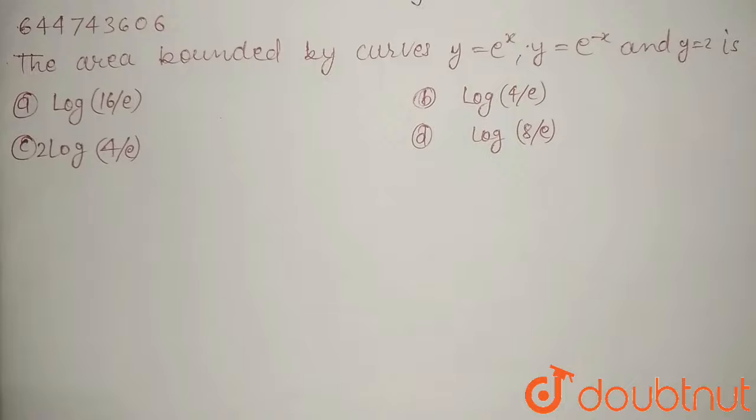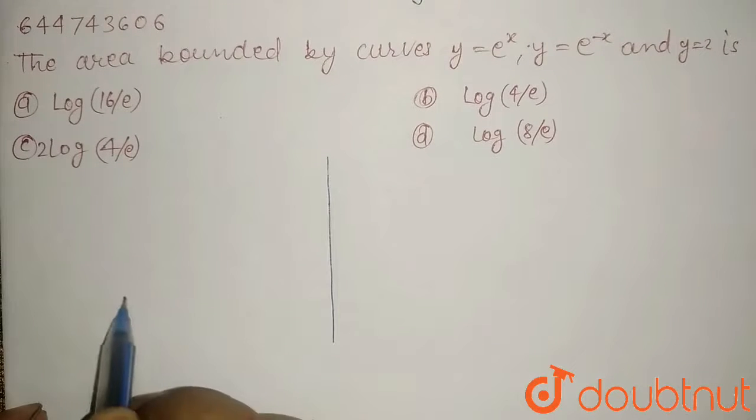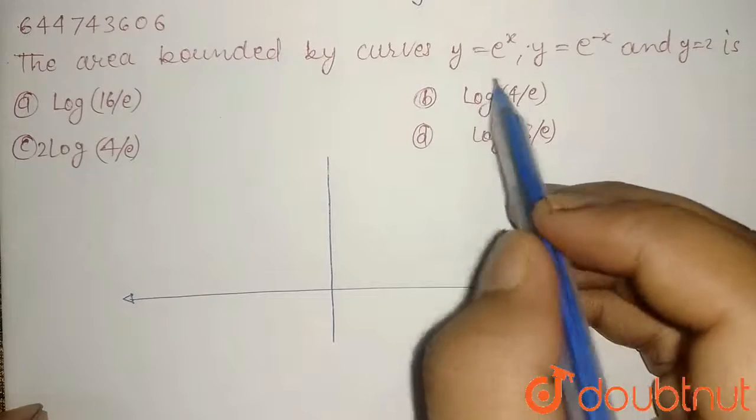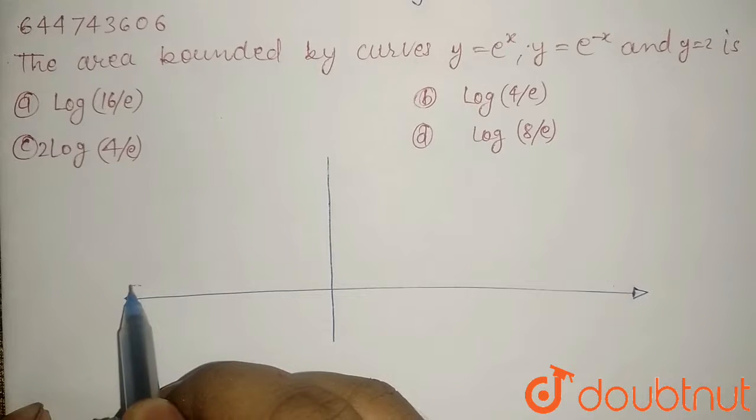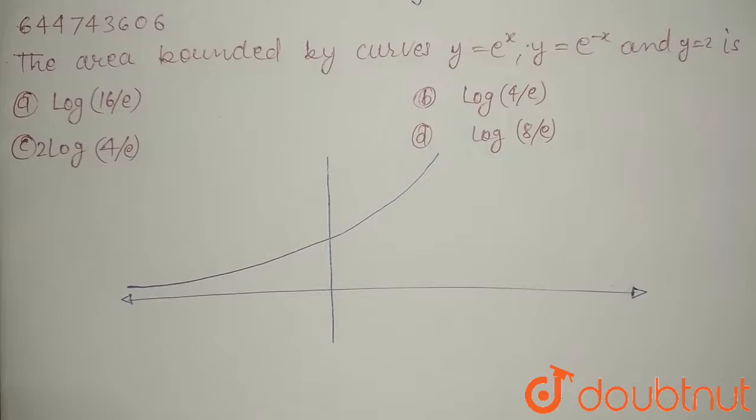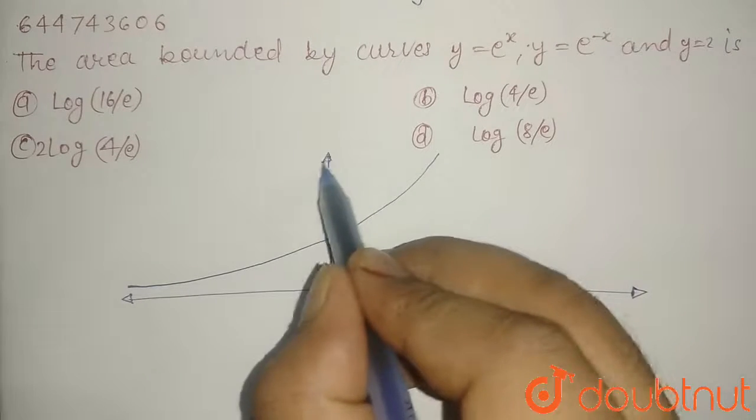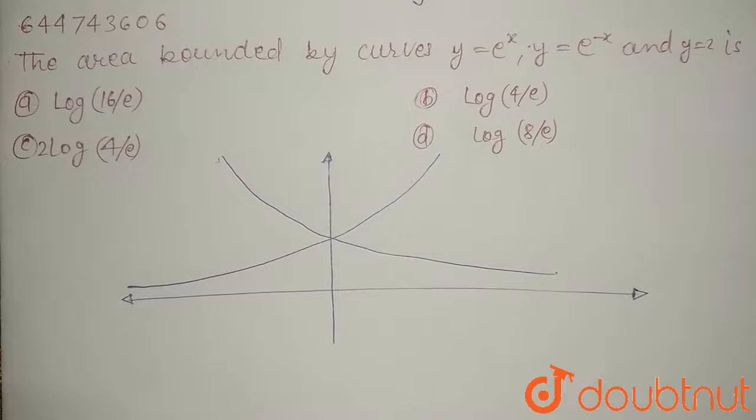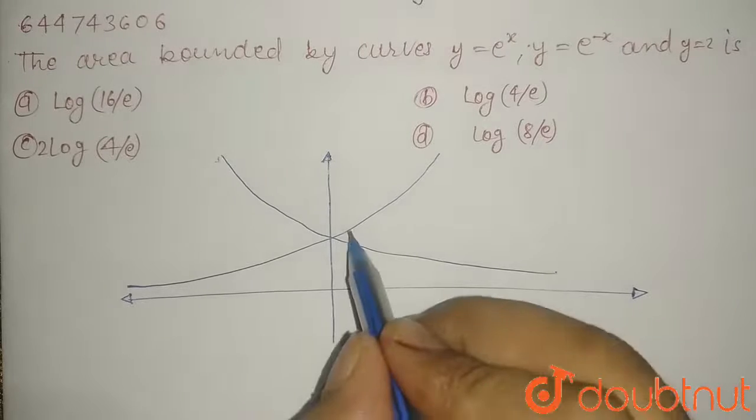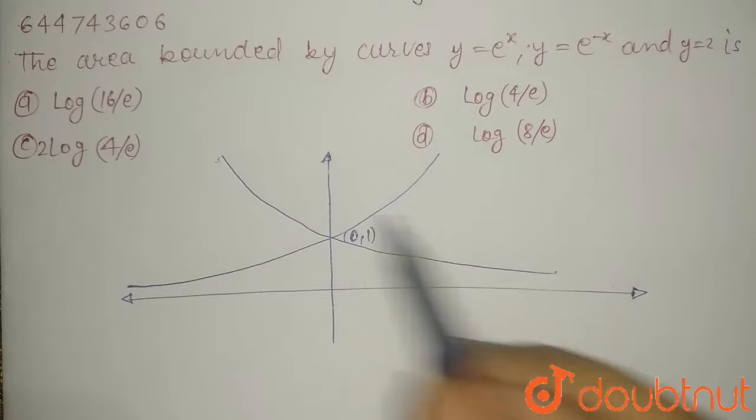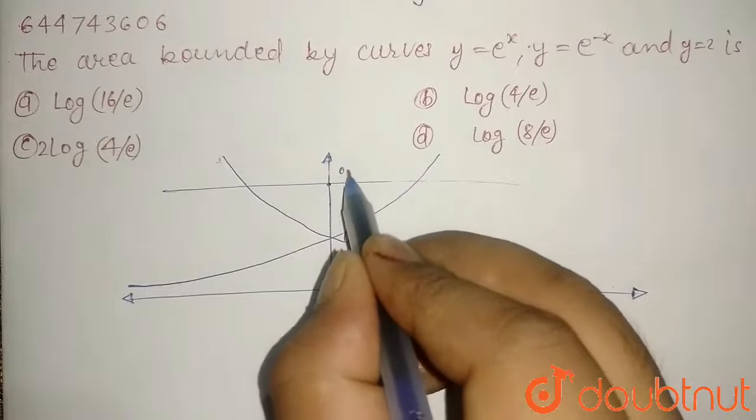First, draw the curves - all three curves on a Cartesian coordinate. First curve is y equals e to the power x, a standard curve that looks like this. The second curve is y equals e to the power minus x, which is the mirror of the previous curve about y axis. These two curves will cut each other at point (0,1), and the third curve y equals 2 is a straight line that will cut at point (0,2).